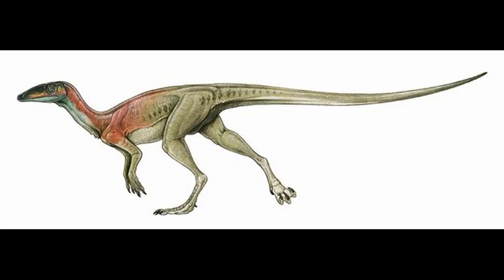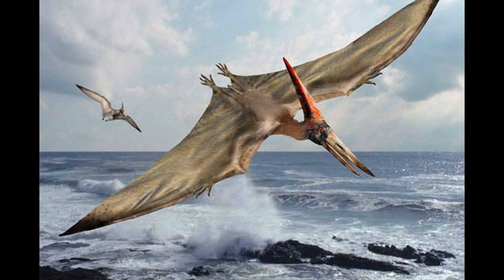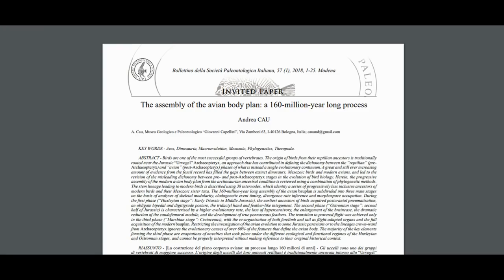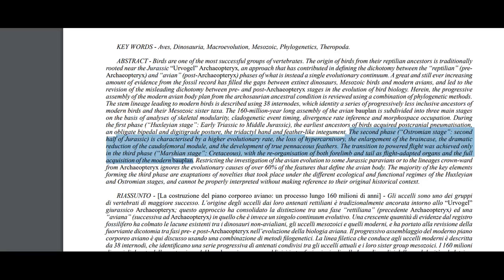Bipedality was not only in dinosaurs but also the ancestors of dinosaurs. And pneumatic bones have been found as far back in the archosaurian line as pterosaurs. Andrea Cau explains bird evolution in her 2018 paper, 'The Assembly of the Avian Body Plan: A 160-Million-Year-Long Process.' The second phase, the Ostromian stage — second half of the Jurassic — is characterized by a higher evolutionary rate, the loss of hypercarnivory, the enlargement of the brain case, the dramatic reduction of the caudofemoral module, and the development of true pennaceous feathers. The transition to powered flight was achieved only in the third phase, the Martian stage in the Cretaceous, with the reorganization of both forelimb and tail as flight-adapted organs and the full acquisition of the modern body plan.